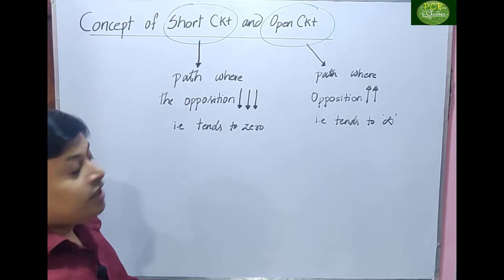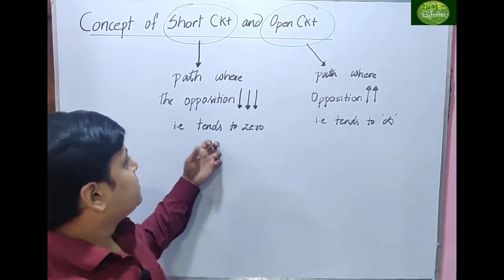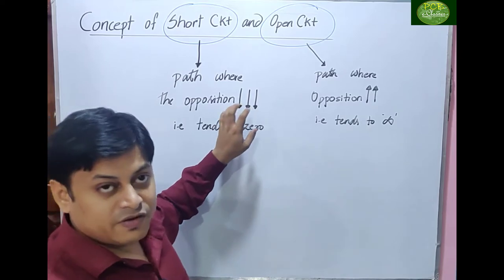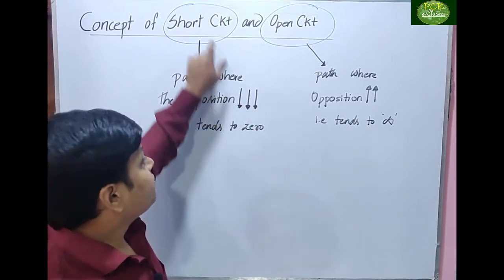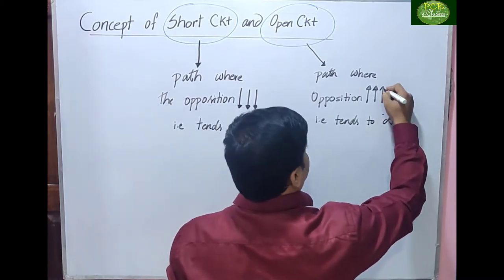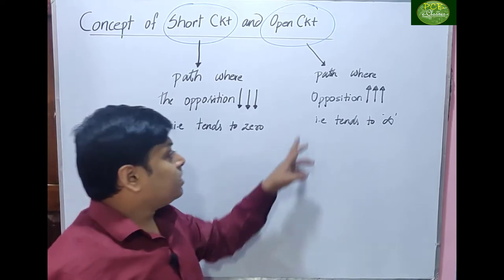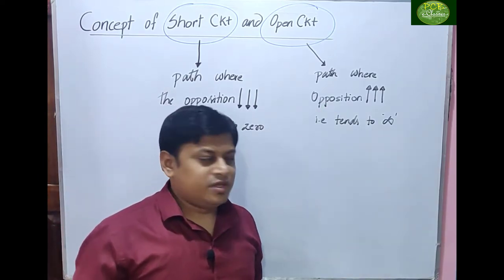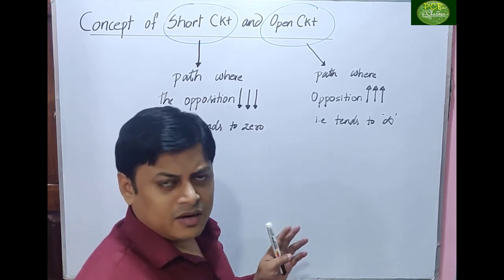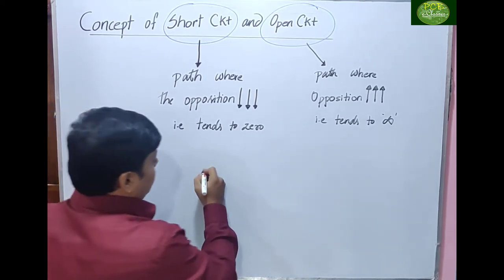So short circuit is a path where opposition is very very less, whereas in open circuit the opposition is very very high, tending to infinite. Now, to understand what this opposition means, let's take an example that can be understood by any layman.